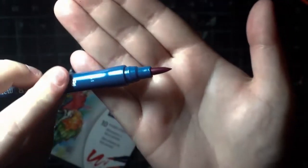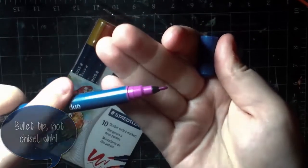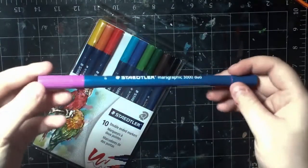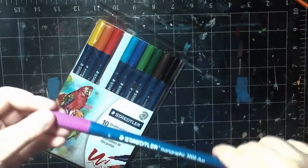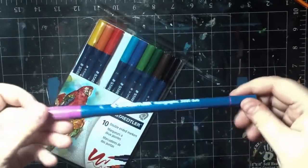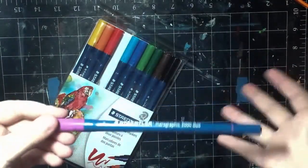Here is the brush tip, and here is the chisel tip. Now, as far as I know, these are not refillable, but these are watercolor markers. So you can use these and then use water over them to kind of blend them out and to make a watercolor effect.